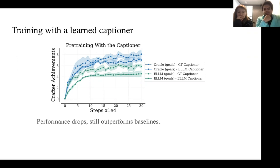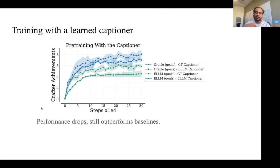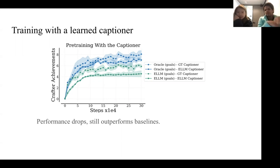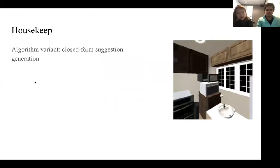It's still an interesting area for future work to see how we can improve this and avoid being bottlenecked by the unrealistic assumption of having a transition captioner. Regarding Crafter achievements, the max is on the order of 15 or so, but this is very hard — even oracle agents are getting nowhere close to that. So that was Crafter.